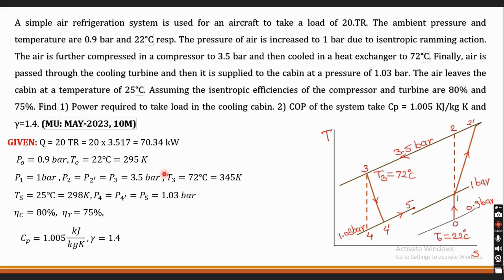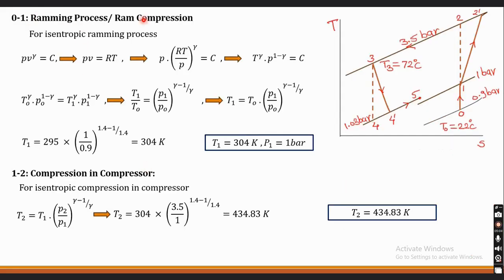Let us solve this problem step by step. The procedure for an air refrigeration system is to find temperature and pressure at each point: 0, 1, 2, 3, 4. First, process 0 to 1 — the ramming process or ram compression. Since this process happens isentropically, we use the relation PV^γ = constant. Using PV = RT to relate pressure and volume, we derive the relation between temperature and pressure: T^γ × P^(1−γ) = constant.